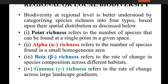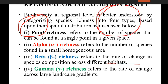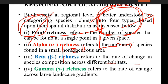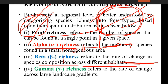Beta richness refers to the rate of change in species composition across different habitats. For example, in one location the soil type, landscape, and climatic conditions are a certain way, and 100 kilometers away those conditions differ — so the species composition changes. That change in species composition across different habitats is called beta richness.